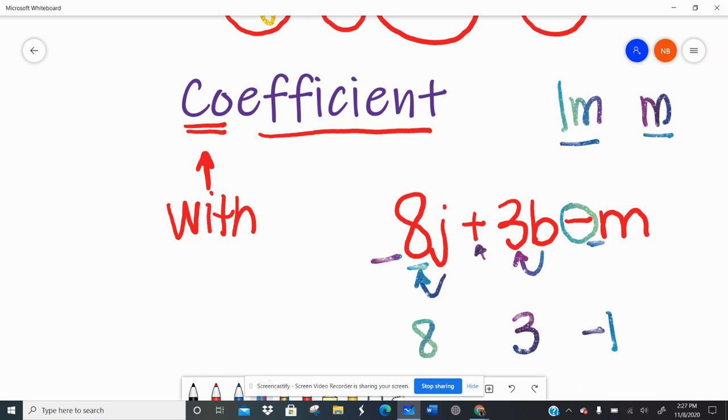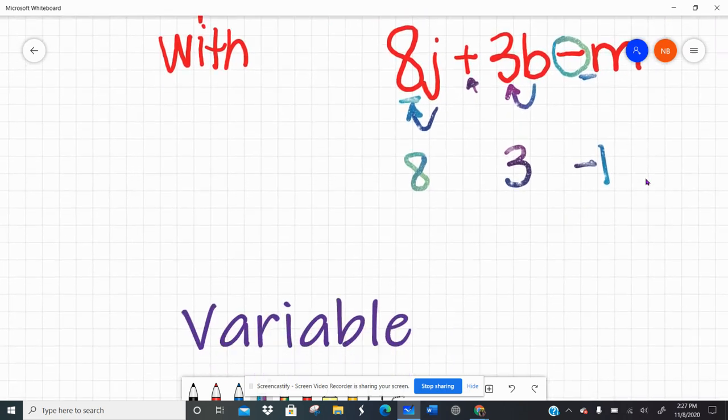So my coefficient is not just 1. It's negative 1 for that minus sign, right? So pay attention to the signs that you have. Make sure that you're writing whether the coefficient is positive or negative, right? Super important.